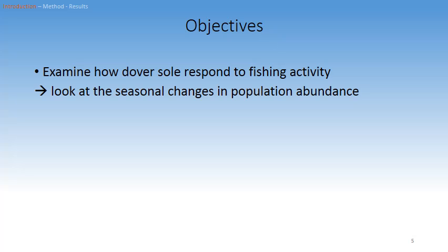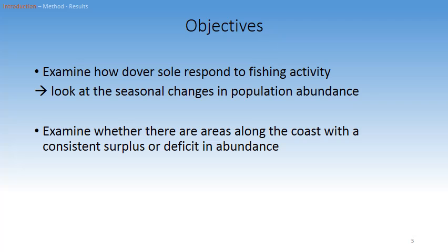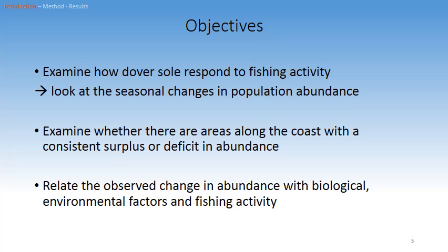To do so, we are going to look at the seasonal changes in population abundance. Then we will examine whether there are areas along the coast which show a consistent surplus or deficit in abundance. Finally, we will look at whether these observed changes are mainly due to fishing activity, or whether they could be explained by other biological or environmental factors.